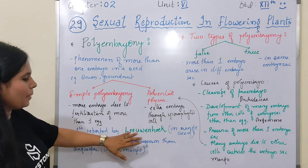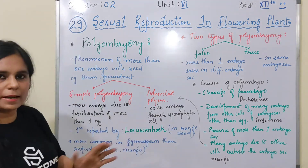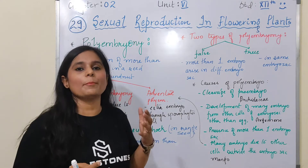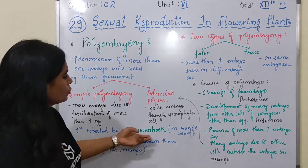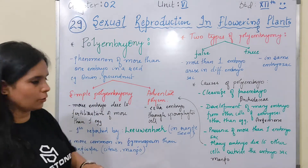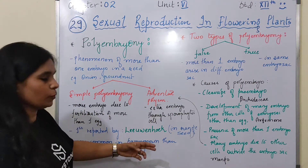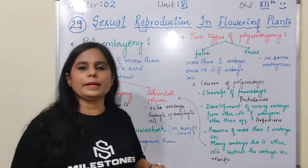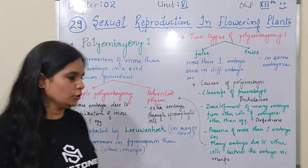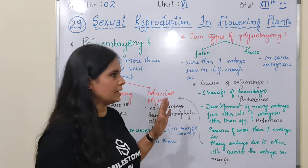Polyembryony was first reported by Leeuwenhoek in orange seed — because citrus shows many cases of polyembryony condition. Leeuwenhoek first found out polyembryony condition in orange seed. It is more common in gymnosperms compared to angiosperms. In angiosperms like citrus and mango, we can easily find this case.